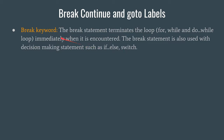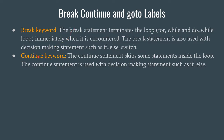Next we have the continue keyword. The continue statement skips some statements inside the loop and is used with decision-making statements such as if-else. Whenever a continue keyword is encountered, the code immediately after the continue statement inside a particular block is completely ignored — that means the part of code written after the continue keyword will not be executed; instead, the jump will directly shift to the beginning of the loop.